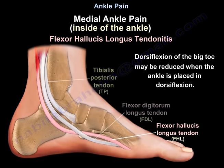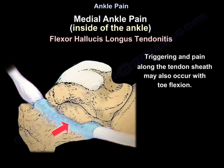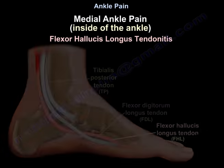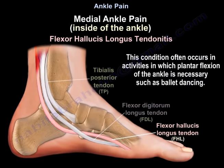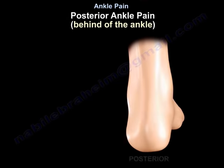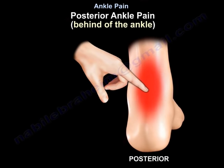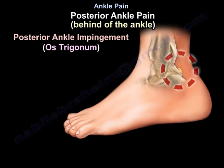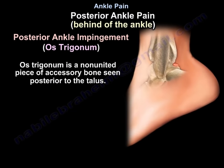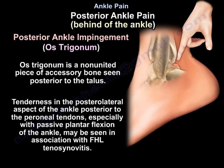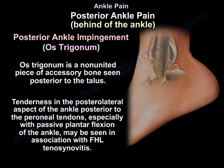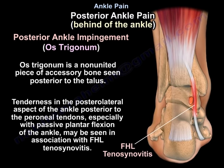Dorsiflexion of the big toe may be reduced when the ankle is placed in dorsiflexion. Triggering and pain along the tendon sheath may also occur with toe flexion. This condition often occurs in activities requiring plantar flexion of the ankle, such as ballet dancing. Posterior ankle impingement due to the os trigonum — a non-united accessory bone seen posterior to the talus — causes tenderness in the posterolateral aspect of the ankle with passive plantar flexion, and may be associated with flexor hallucis longus tenosynovitis.